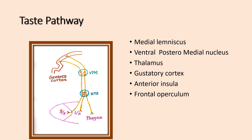To summarize: the anterior two-thirds of the tongue sensation is carried by the facial nerve, the posterior one-third is carried by the glossopharyngeal nerve, and from the pharynx it is carried by the vagus nerve. It reaches the nucleus tractus solitarius, then travels through the medial lemniscus to the ventro-postero-medial nucleus of the thalamus, and from the thalamus it reaches the gustatory cortex located in the anterior insula and frontal operculum.